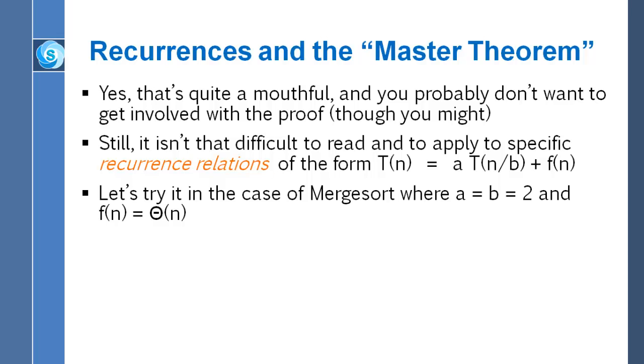So if we go back to merge sort, we can quickly observe that the merge sort recurrence formula is a special case of the situation in the master theorem. So to make that connection, set a and b both equal to 2. And of course, we have t of n is equal to 2 times t of n over 2 plus f of n. But in the case of merge sort, we've said that that little f of n part is capital theta of n. We don't care precisely what that function f of n is. We only care that it is growing at a rate that is capital theta of n.